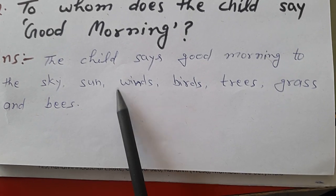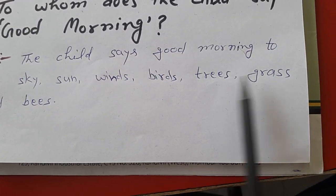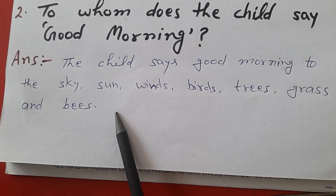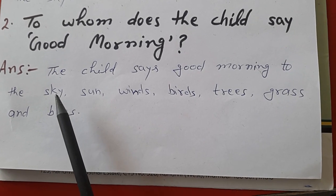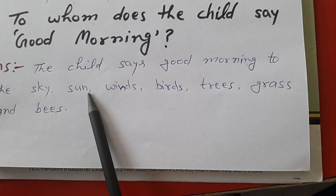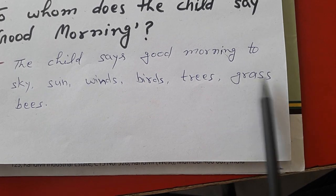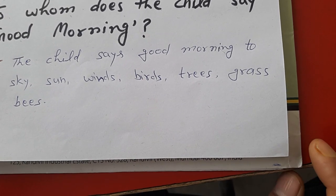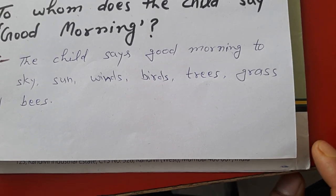The child says good morning to the sky, sun, winds, birds, trees, grass, and bees. Bacha sky ko, sun ko, birds ko, winds ko, trees ko, grass ko, bees ko good morning bolta hai.